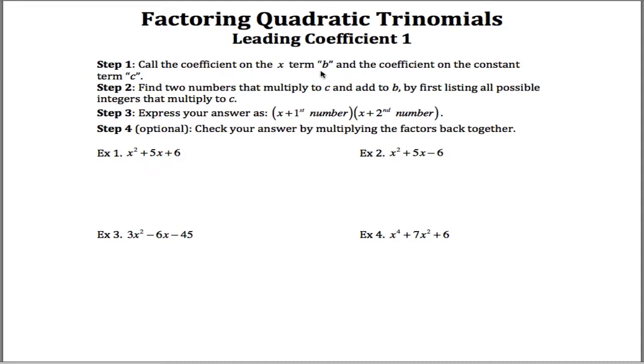So what you do is I kind of just name some terms. The coefficient on the x term, here's my x term right here, the coefficient is the number in front of the x, let's call that b. I'll even write that for this first one. b here would be 5. And the constant term, the coefficient on the constant term, is this 6 right here, c is equal to 6.